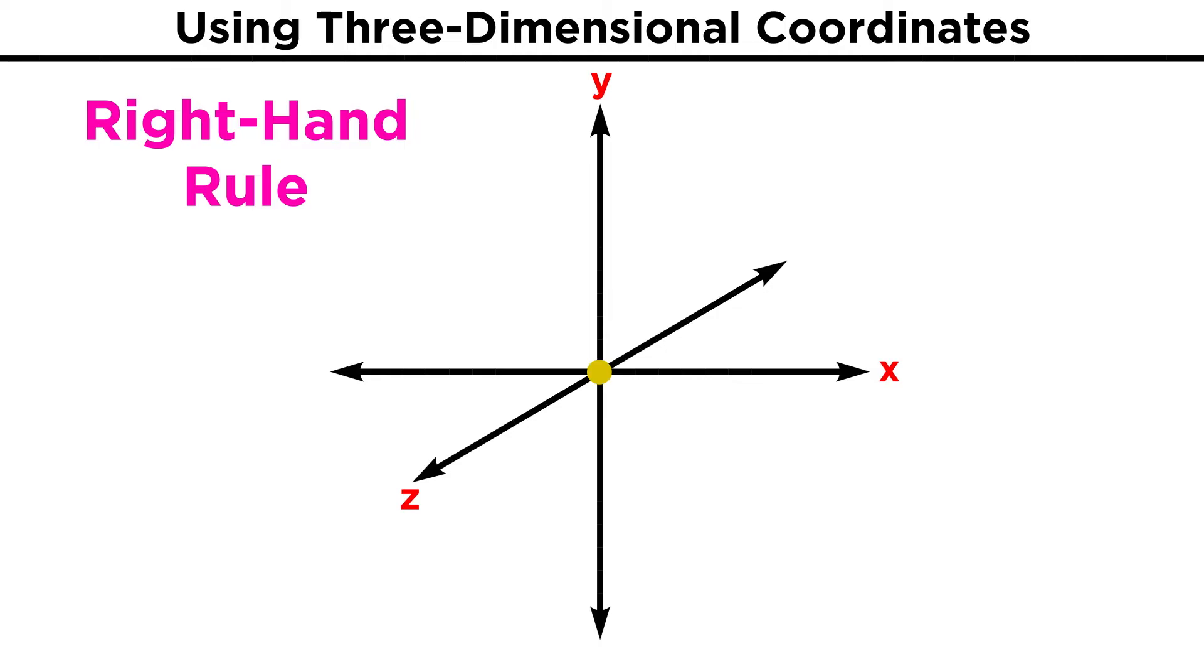This tells us that if you have the three axes, but you want to determine which direction on each axis is positive or negative, simply curl your hand around the Z axis. If your fingers are curling from the positive side of the X axis and towards the positive side of the Y axis in counterclockwise fashion, then your thumb is pointing in the positive direction of the Z axis.